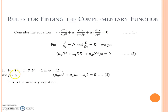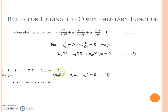The first step for finding the auxiliary equation is to replace D by m and D' by 1. We then get a quadratic equation, and we find the roots of this equation.